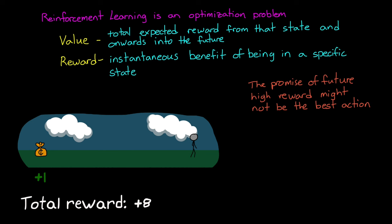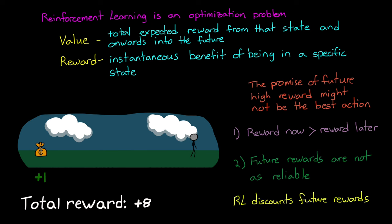Of course, often the promise of a high reward in the future still might not mean that the action is the best, and there's at least two good reasons for this. One, like with the financial market, money in your pocket now can be better than a little more money in your pocket a year from now. And two, your prediction of rewards further into the future become less reliable, and therefore that high reward might not be there by the time you reach it. In both of these cases, it's more advantageous to be a little more short-sighted when estimating value. And in RL, we can control this by discounting rewards by a larger amount the further they are in the future.